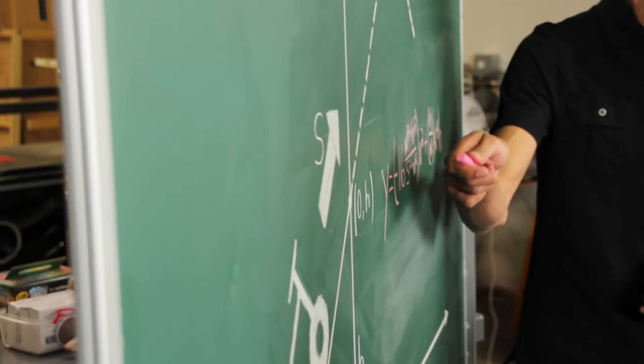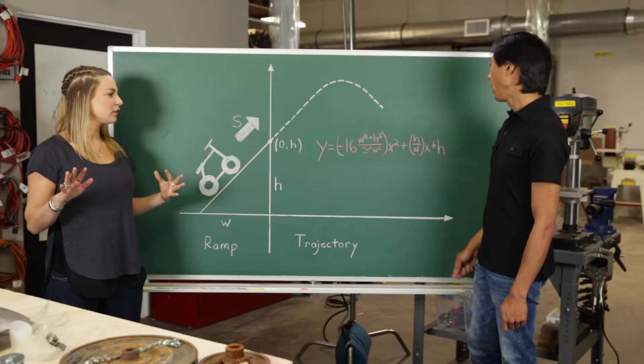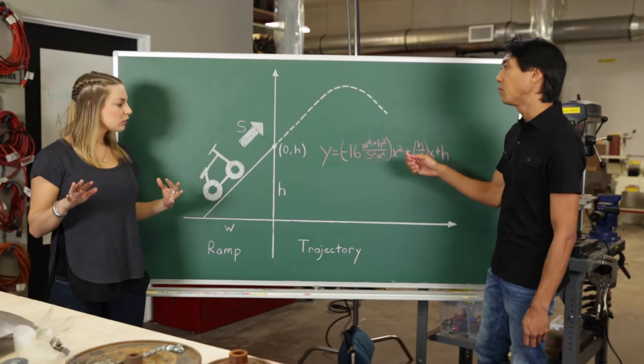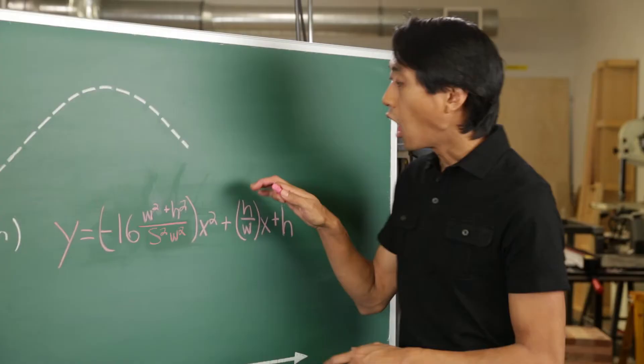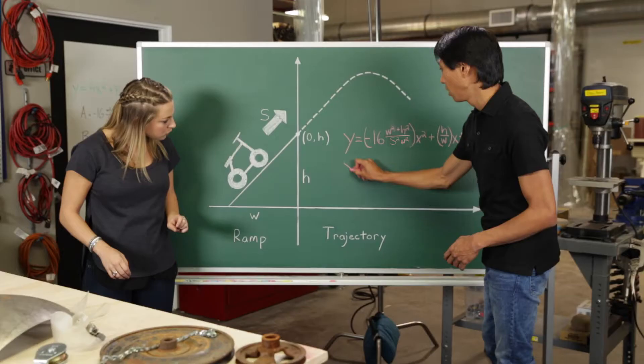Okay, I get this, but the whole equation looks really daunting. It can at first glance, but we can think of it much more simply. All of the terms in the equation are constant, except for X, as the bike launches. So really, the equation is in the form Y equals AX squared plus BX plus C.